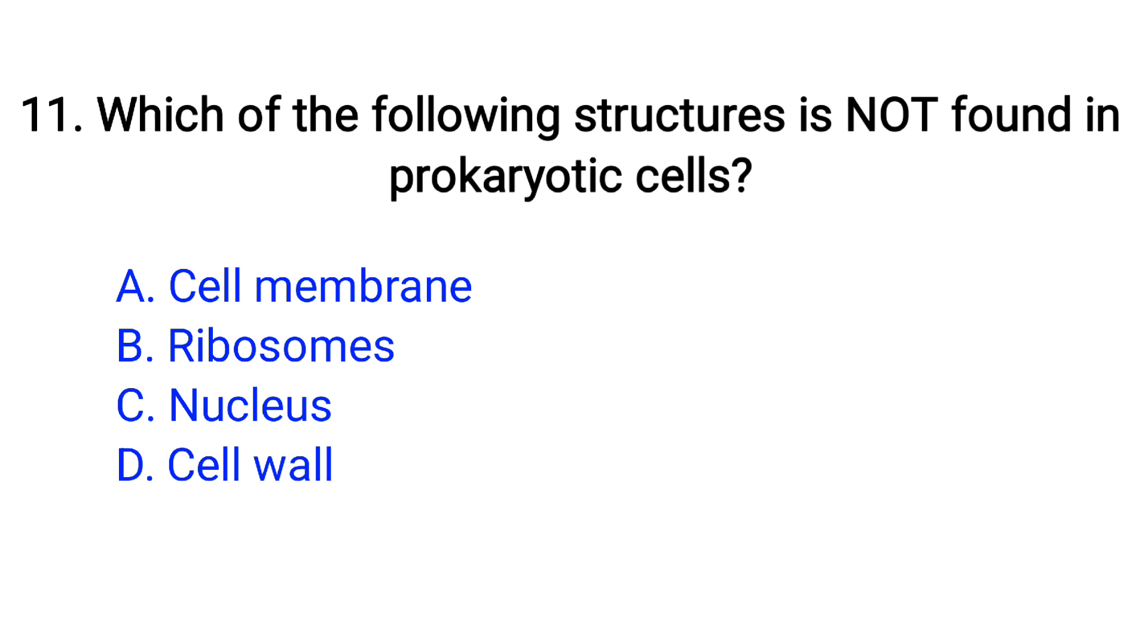Question number 11. Which of the following structures is not found in prokaryotic cells? Option A: Cell membrane, B: Ribosome, C: Nucleus, D: Cell wall. The right answer is option C, Nucleus.